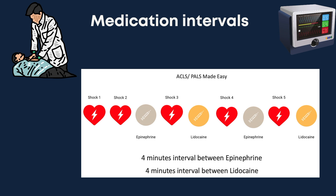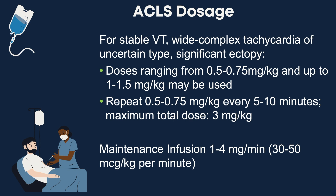For stable VT, wide-complex tachycardia of uncertain type, or with significant ectopy, doses ranging from 0.5 to 0.75 mg per kg and up to 1 to 1.5 mg per kg may be used. Repeat 0.5 to 0.75 mg per kg every 5 to 10 minutes. Maximum total dose is 3 mg per kg. For the maintenance infusion, the dose is 1 to 4 mg per minute, which is 30 to 50 micrograms per kg per minute.